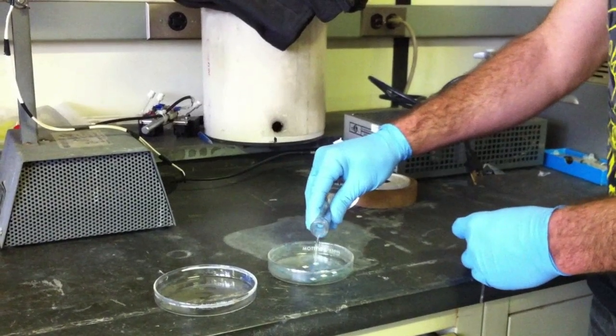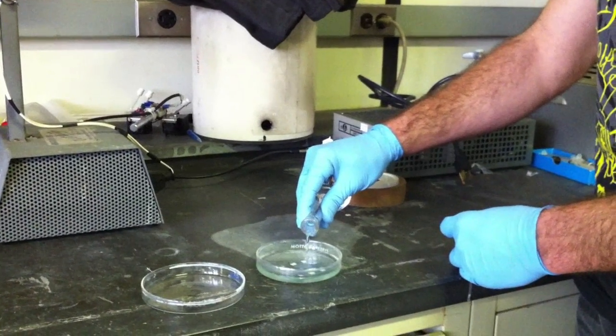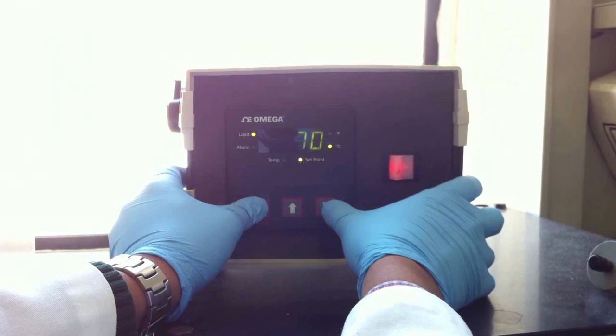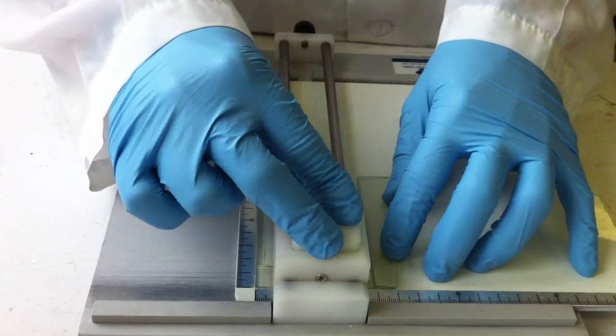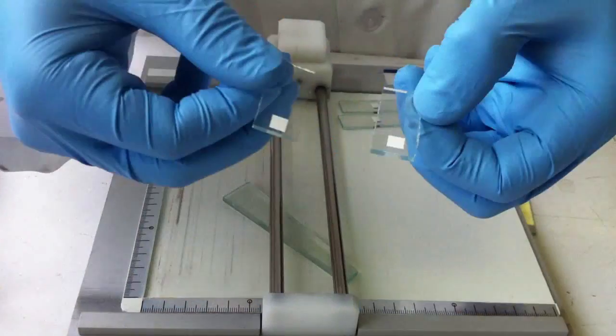Just before depositing our solar sensitizer, our photo anode is treated a second time with titanium tetrachloride to increase the surface area and improve quantum dot deposition. Individual solar cells are then cut from the optically transparent electrode.